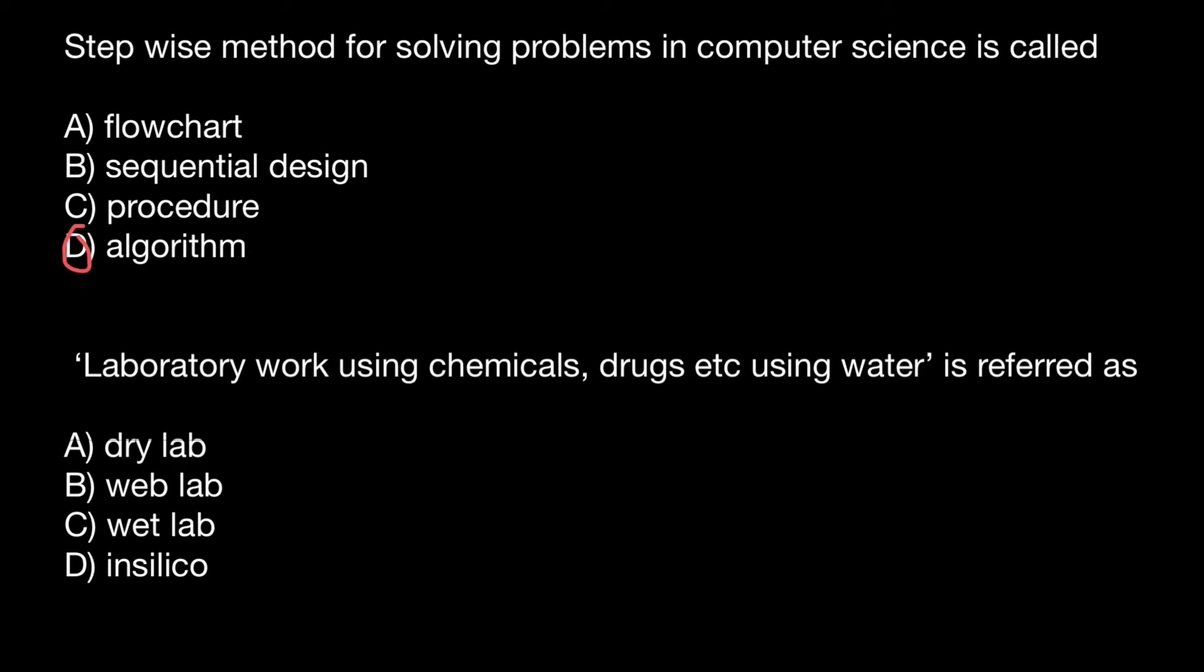So what is the algorithm? Algorithm is a process or set of rules to be followed in calculations or other problem solving operations, especially by a computer. In other words, algorithm is a step-by-step solution. Each step has clear instructions like a recipe.